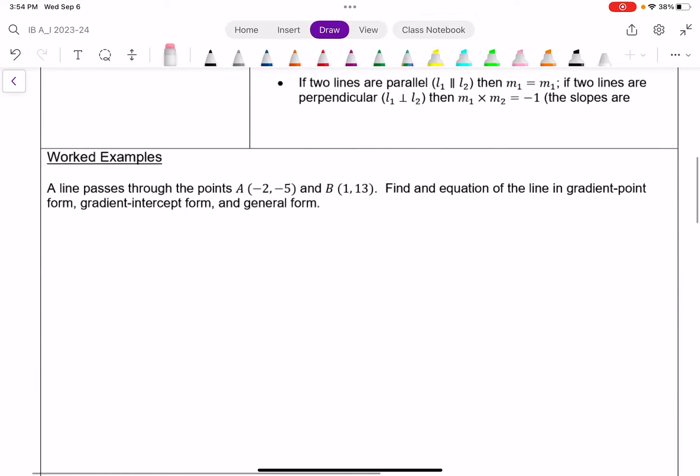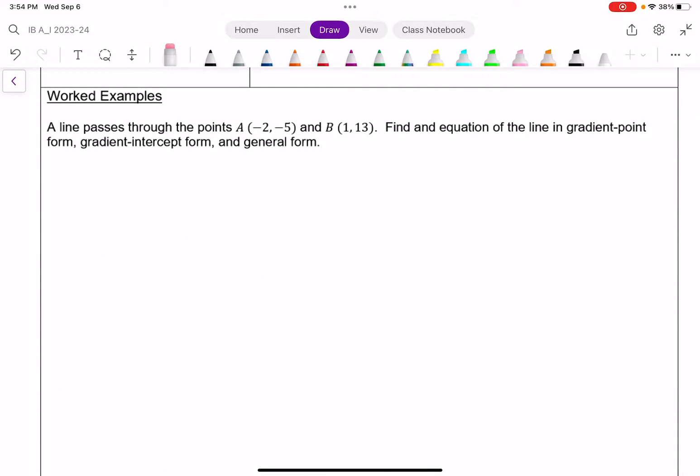All right, so first question: a line passes through the points A, negative 2, negative 5, and B, 1, 13. Find an equation of a line in gradient point form, gradient intercept form, and general form.